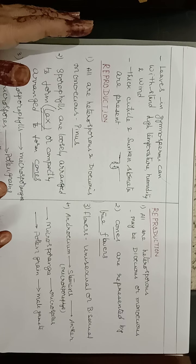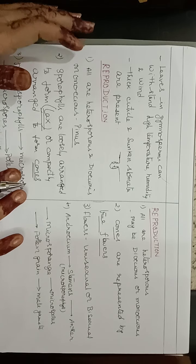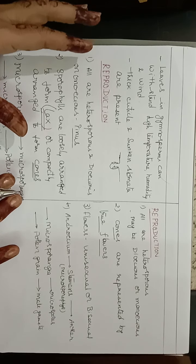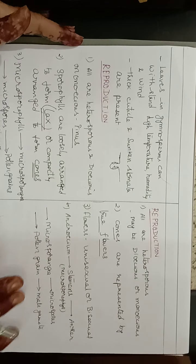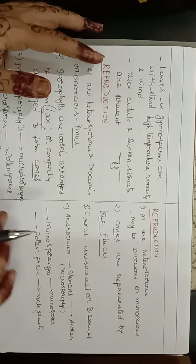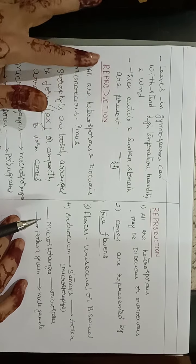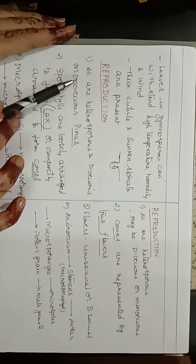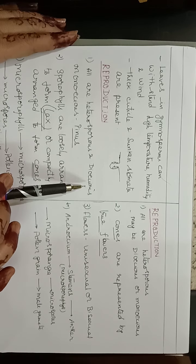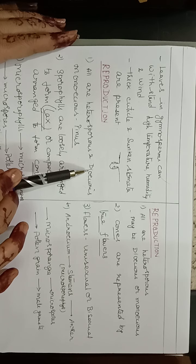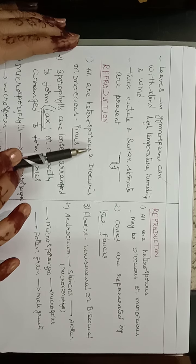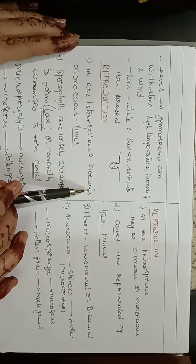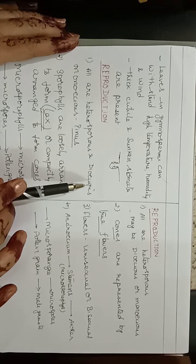Coming to reproduction: all gymnosperms are heterosporous — two types of spores are formed: microspores and megaspores. Most are dioecious, meaning male and female sex organs are present on different plants. Monoecious is found in Pinus, where male and female cones are present on the same plant.